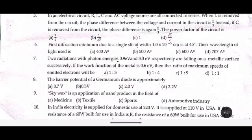Sixth one: The first diffraction minimum due to a single slit of width 1.0 × 10⁻⁵ cm is at 45 degrees. Then the wavelength of light used is dash.